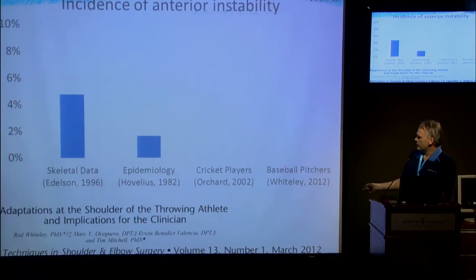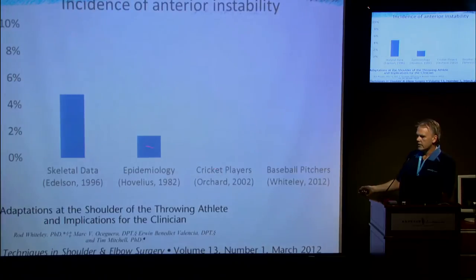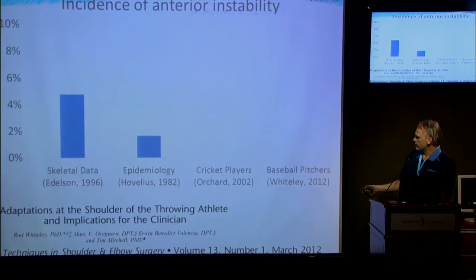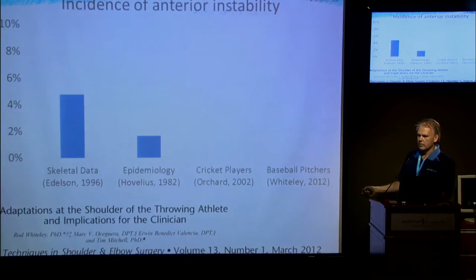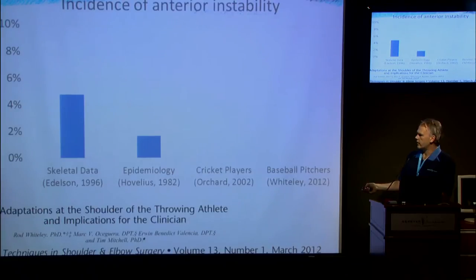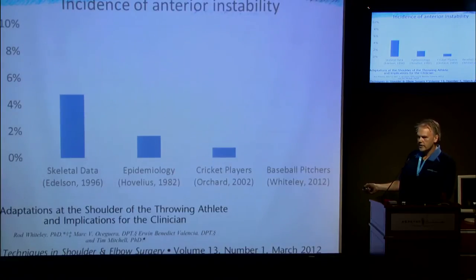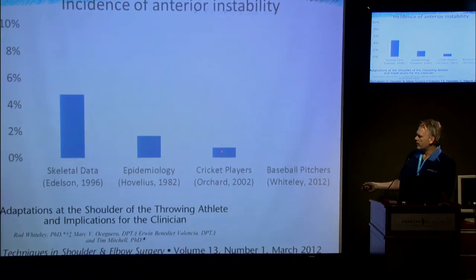Cricketers are throwers who are probably better than average but certainly aren't expert throwers. Cricket is a sport played across pretty much all commonwealth countries, but to be a good cricketer you don't need to be a good thrower — you can be a bad thrower and still play cricket. John Orchard's series of 527 injuries over a couple of years showed only four anterior instabilities, so in these throwing athletes the incidence of anterior instability looks to be lower than the general population.